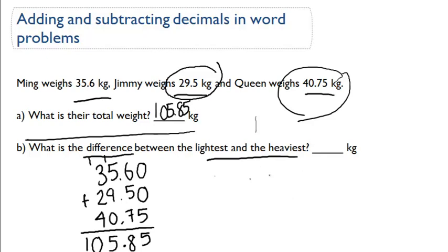Oh, I love subtraction. So we're going to have to do 40.75 minus 29.5. Okay, what are we missing here? There's no number in the hundredths place. So we're going to need to add a, you got it, a place holding 0. Very good.